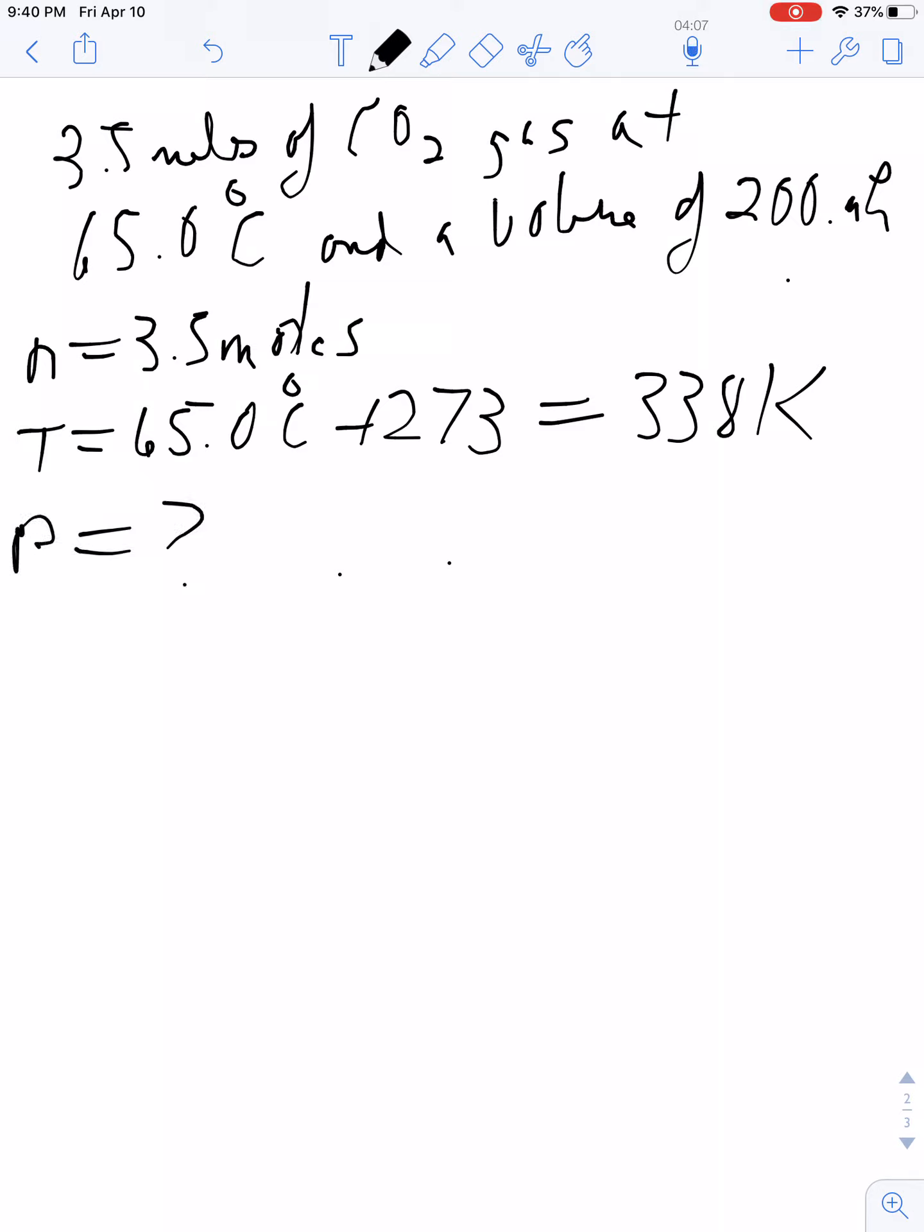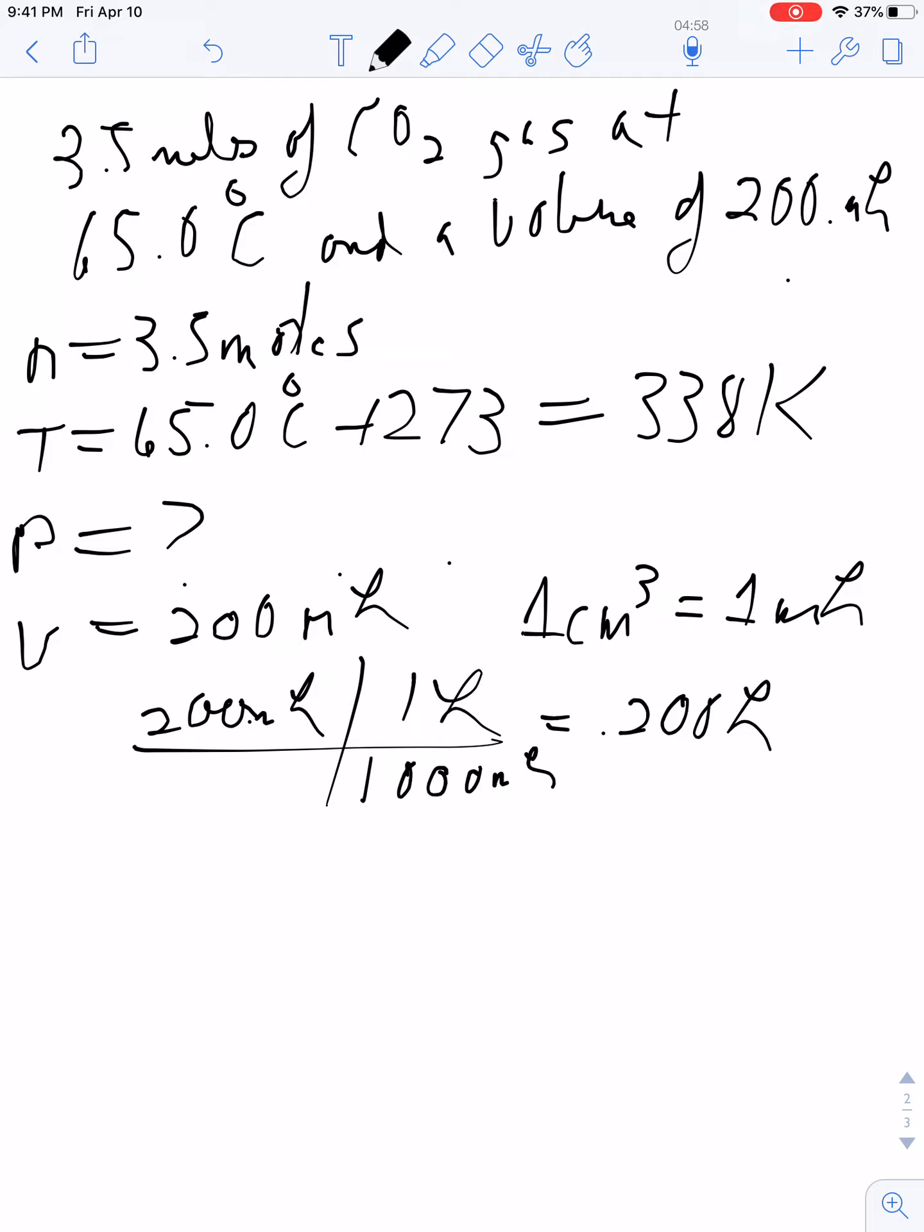The pressure is what I'm trying to find. The volume is 200 milliliters. Volume must be in liters. Suppose they gave this to me in cubic centimeters instead—well, one cubic centimeter is equal to one milliliter. You know that 1000 milliliters is equal to one liter, so once you do that conversion, you will get 0.200 liters. Now I have all the information that I need to solve the problem.